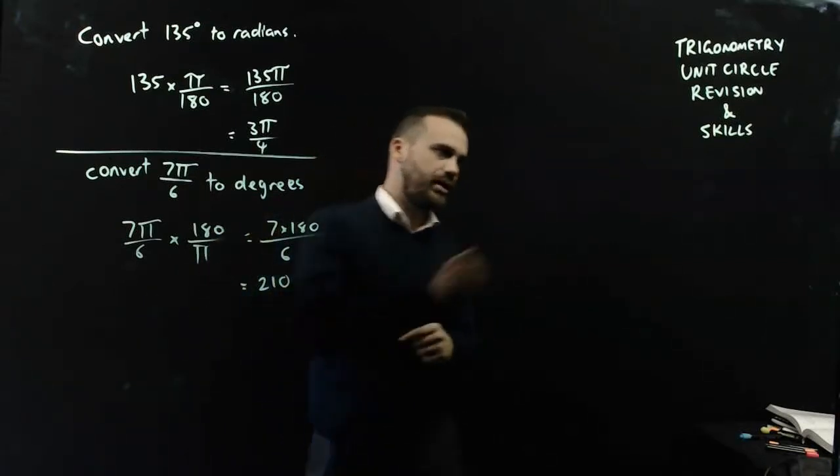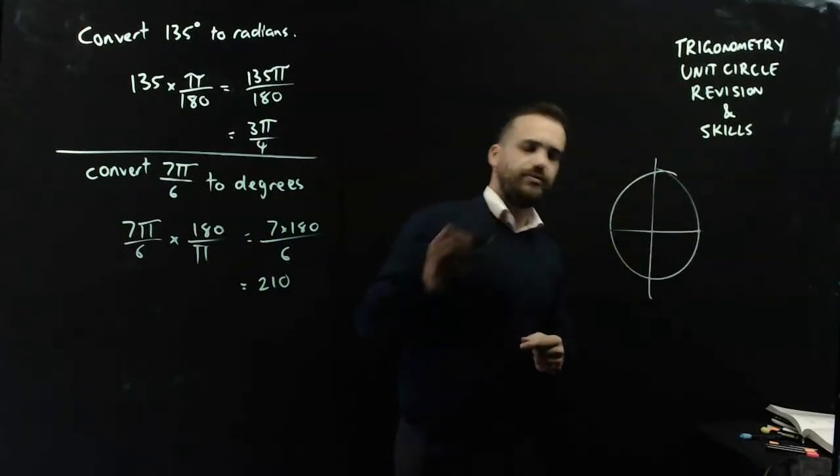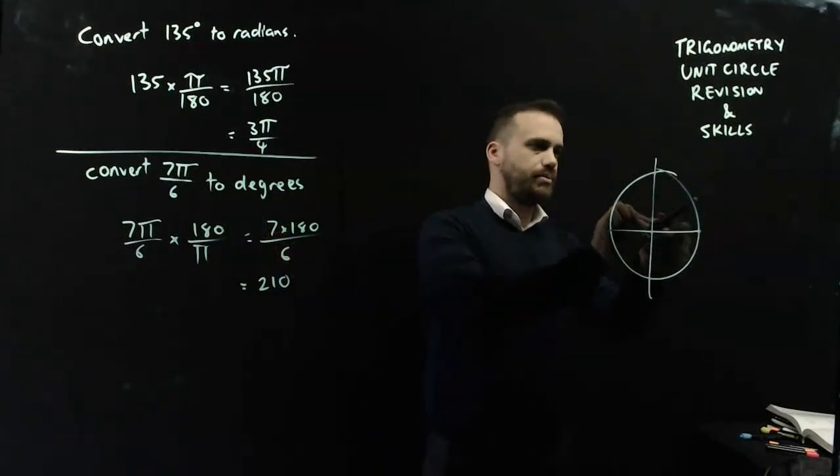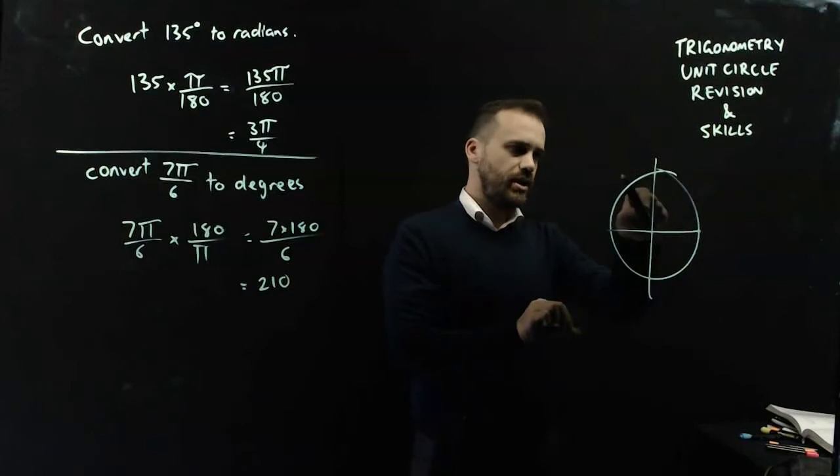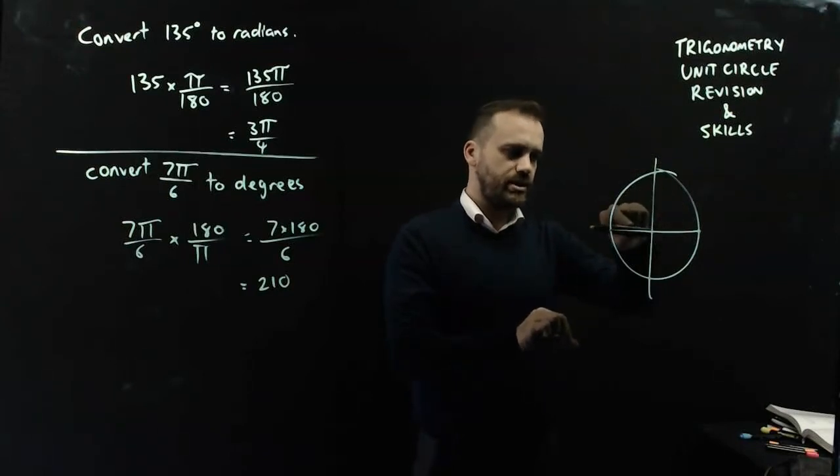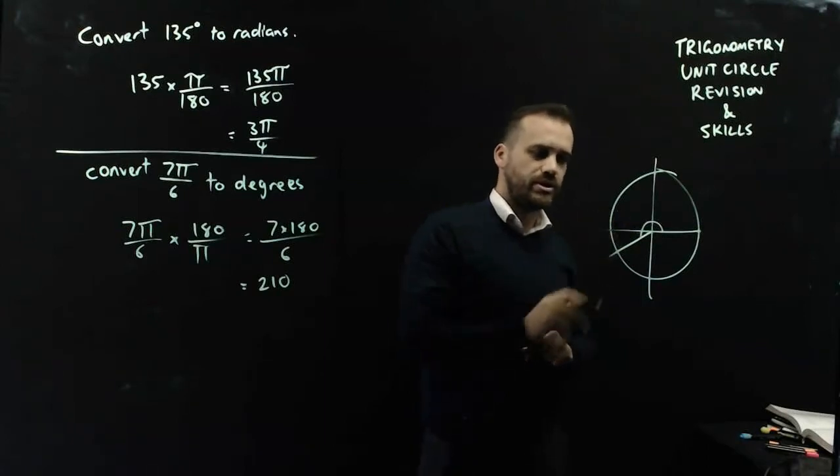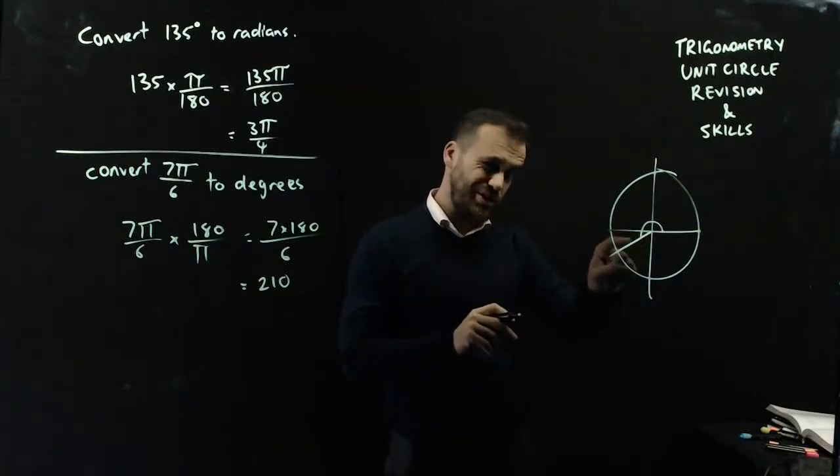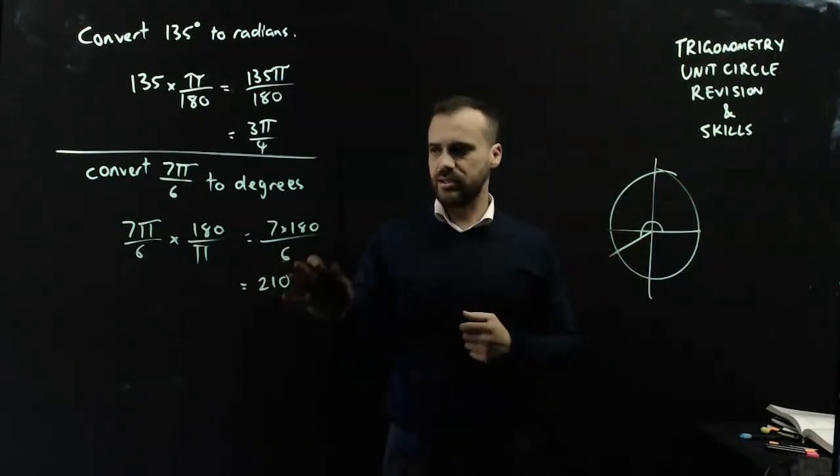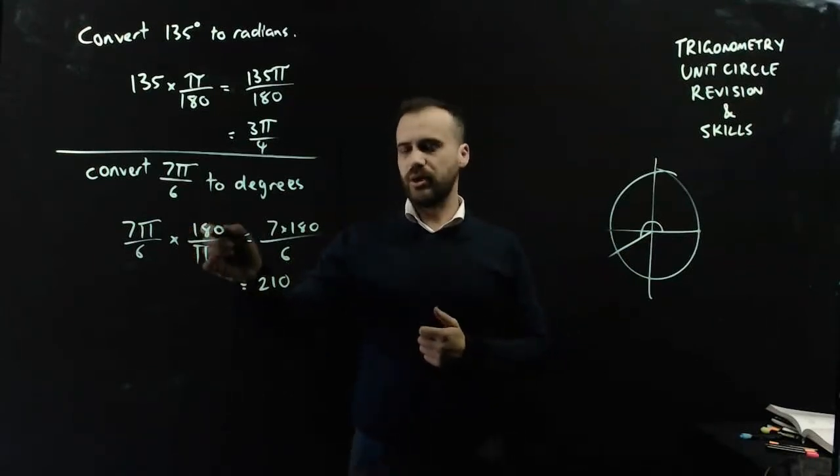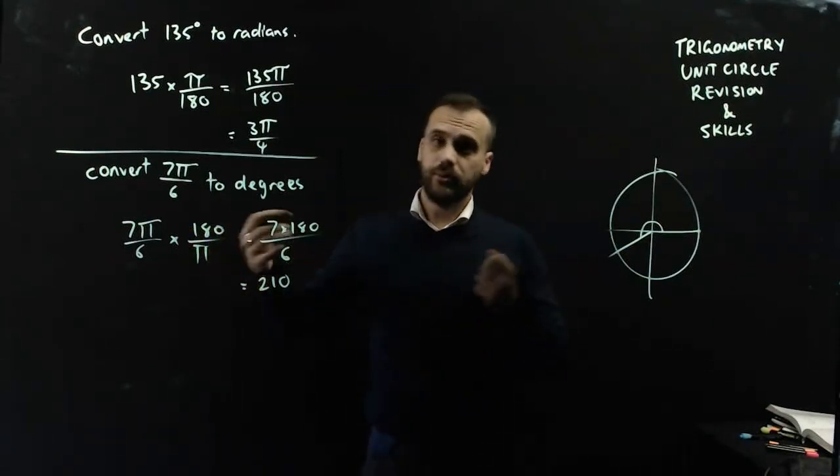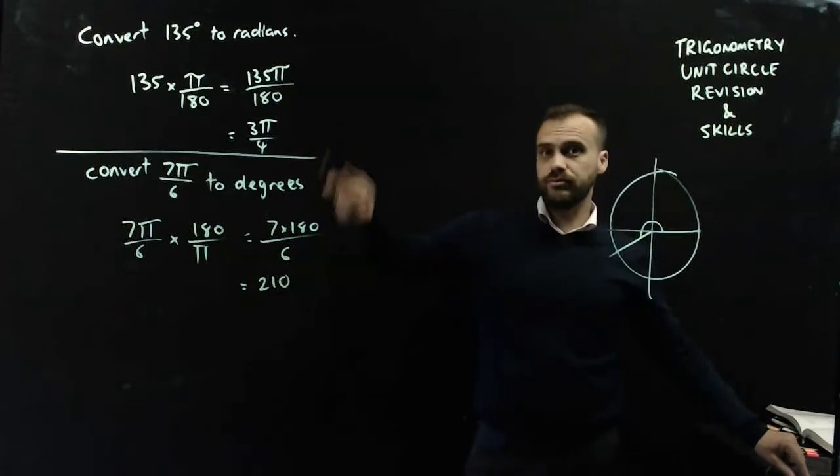Now again, how did I know that? I've got my unit circle. 7π on 6 is π on 6, 2π on 6, 3π on 6, 4π on 6, 5π on 6, 6π on 6, 7π on 6. That's 7π on 6, which is the same as 180 plus 30 degrees, 210 degrees. But multiplying by 180 on π will also get you there. So we've converted both ways.